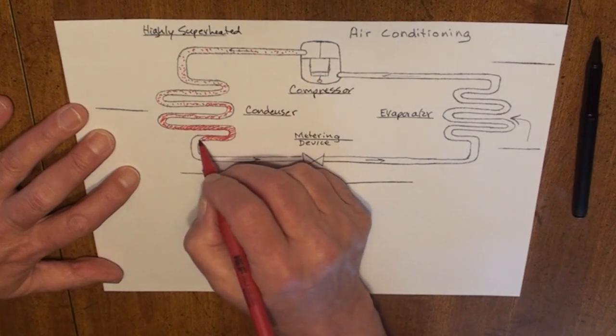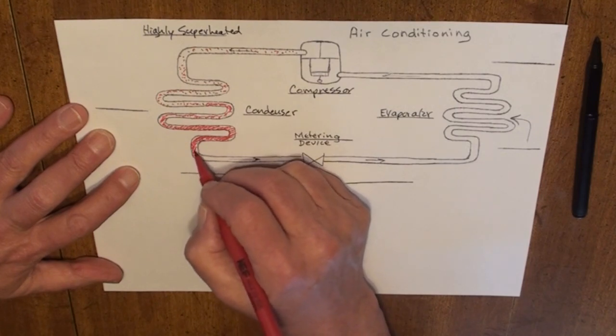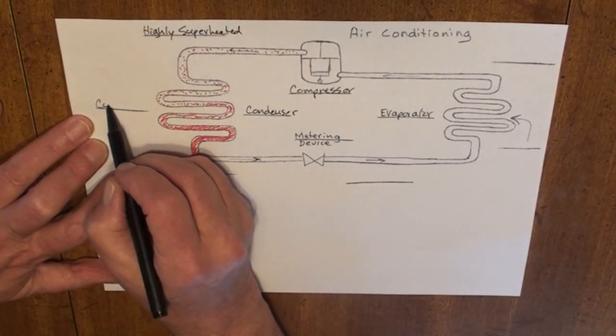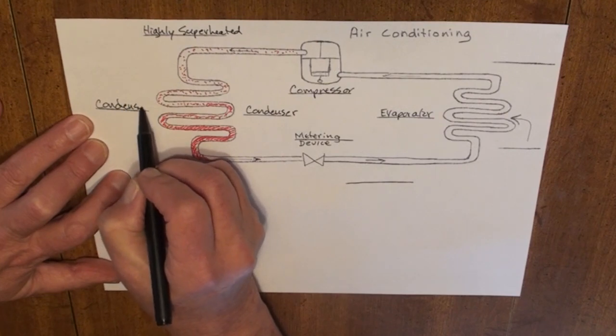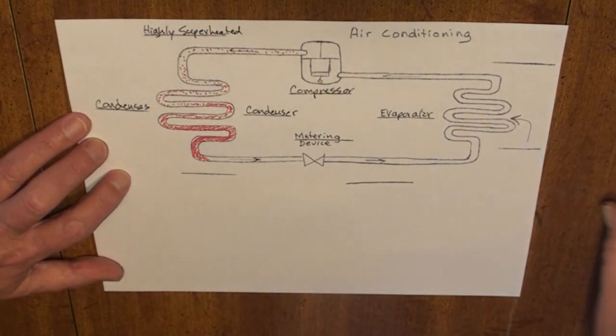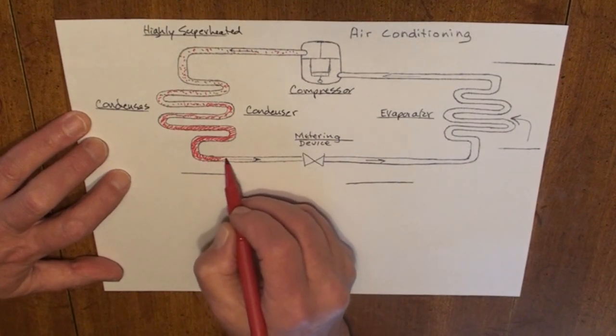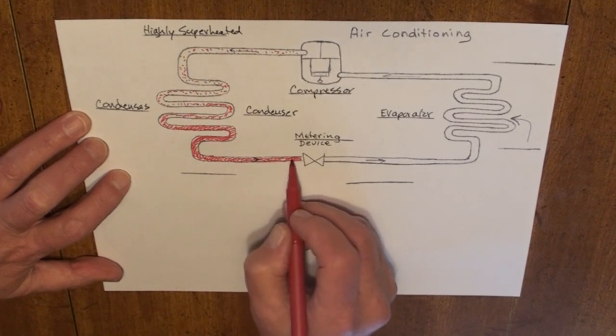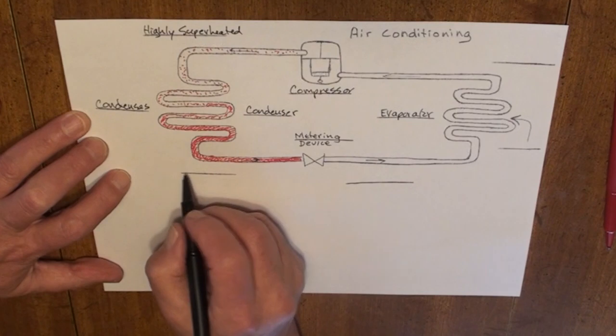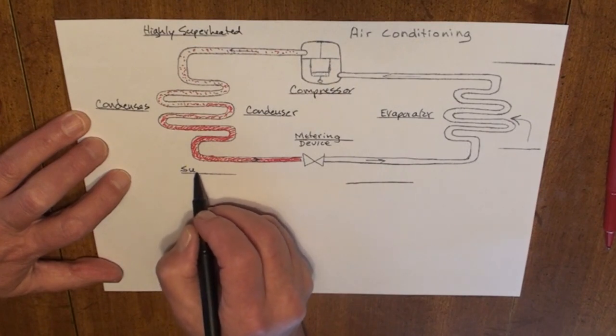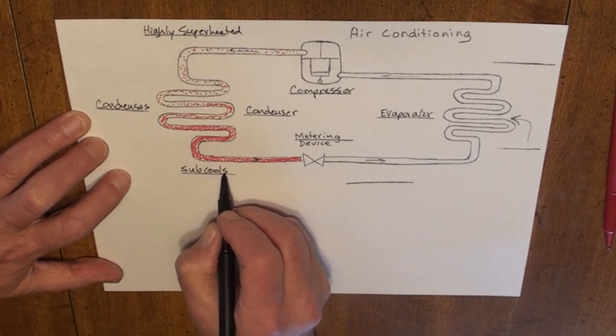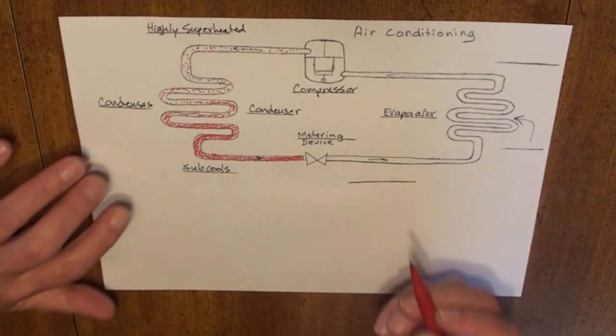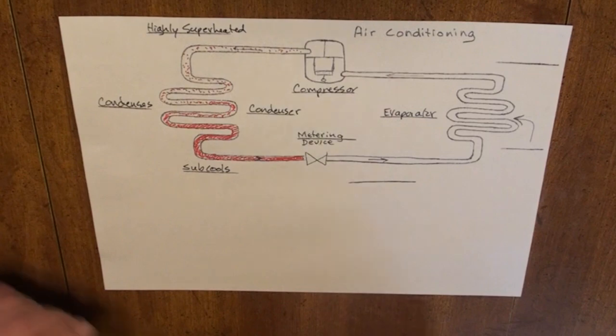Once all of the vapor is removed, it again begins to reject sensible heat. It rejects sensible heat. It sub cools the refrigerant. And it enters the metering device as a 100% liquid.